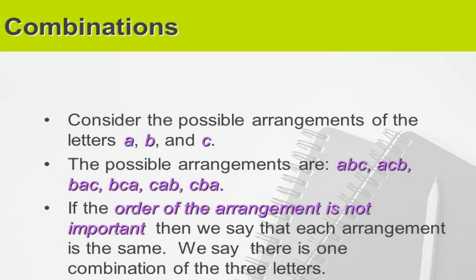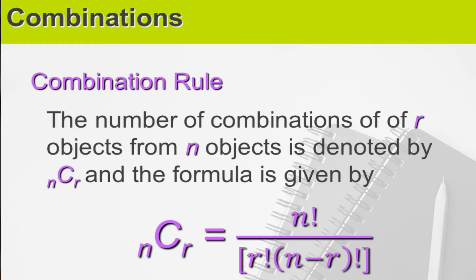Order of arrangement is not important. Combination rule: the number of combinations of R objects from N objects is denoted by combination of N taken R. The formula is given by C(N,R) = N factorial over R factorial multiplied by N minus R factorial.